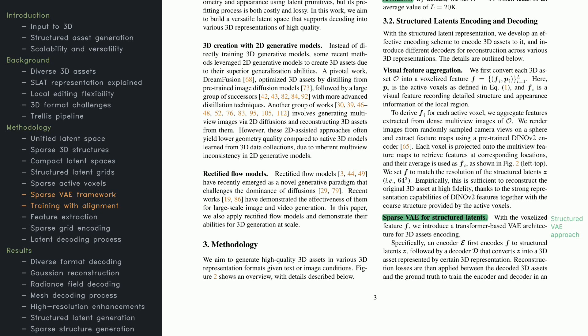Two big ideas stand out here. First, visual feature aggregation. The system takes multi-view images of a 3D asset and maps them into a sparse 3D grid. Each grid cell holds detailed geometry and appearance features, aggregated from different viewpoints. Second, the sparse VAE. It encodes and decodes those features into structured latents. An encoder turns the 3D features into compact representations and a decoder reconstructs them, aligning closely with the original. This approach sets the stage for scalable 3D generation since you can train on large datasets and then generate diverse, high-quality results.